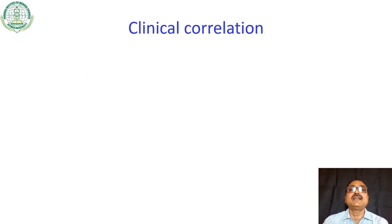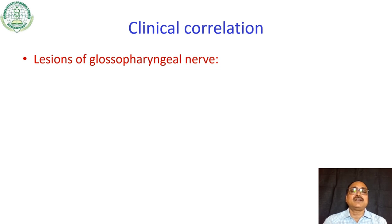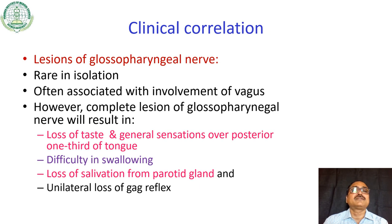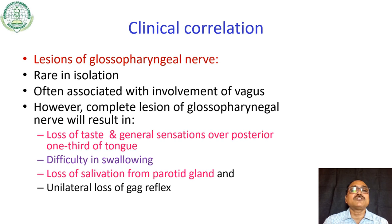Coming to the clinical correlation of the glossopharyngeal nerve — lesions are rare in isolation because its course is along with the 10th and 11th nerves. It is often associated with involvement of the vagus nerve. A complete lesion will result in loss of taste and general sensation over the posterior one-third of the tongue, difficulty in swallowing, loss of salivation from the parotid gland, and unilateral loss of gag reflex.